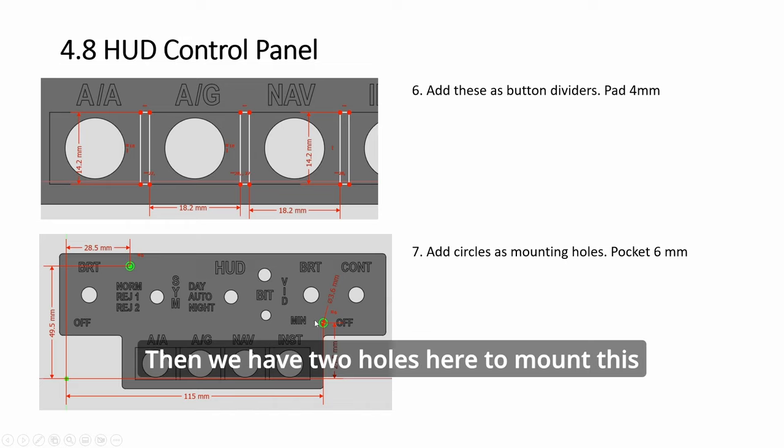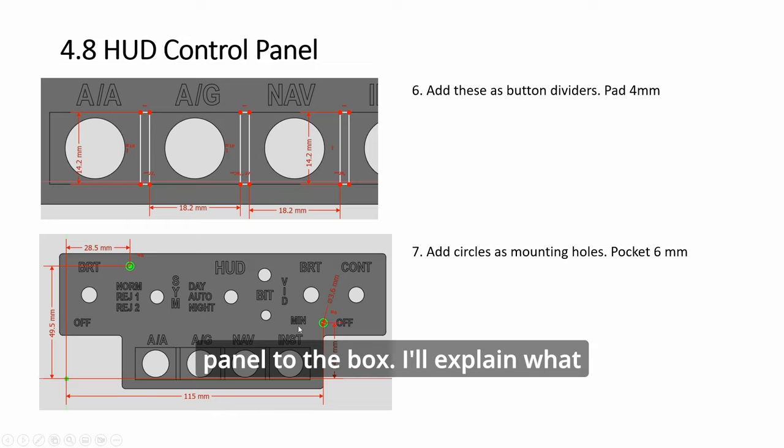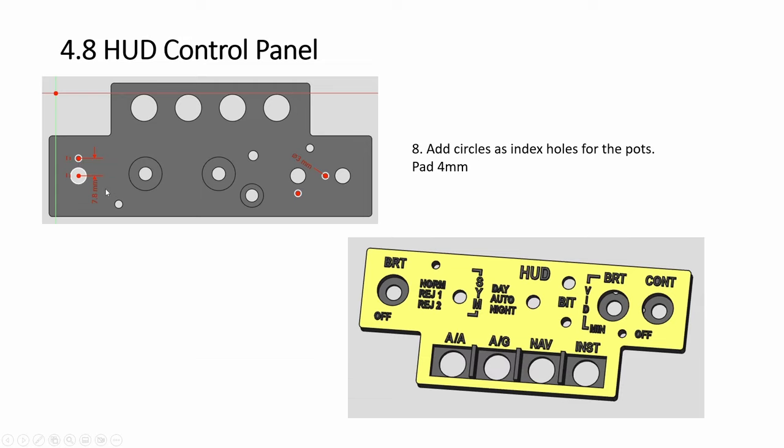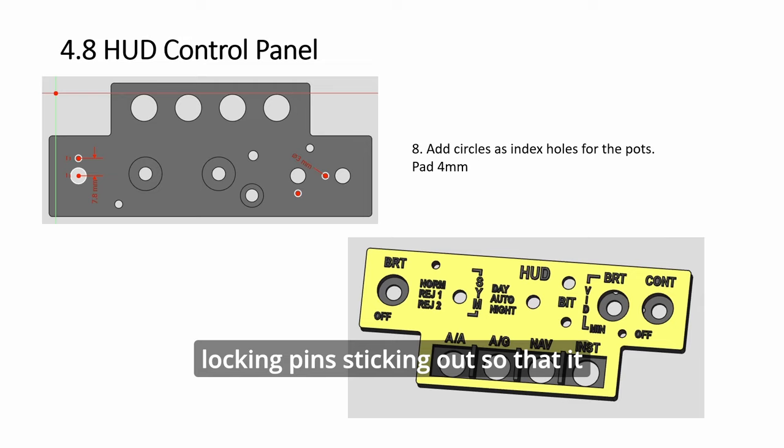So then we build dividers and pad up. Then we have two holes here to mount this panel to the box. I'll explain what is the box about. So index holes at the bottom for the part. The part has those locking pins sticking out so that it doesn't spin. So you want to build them. It can be any orientation.